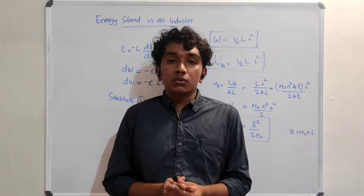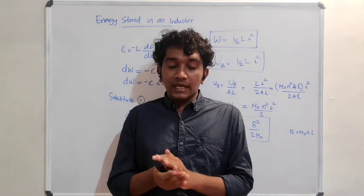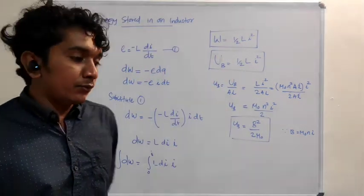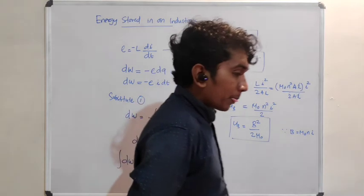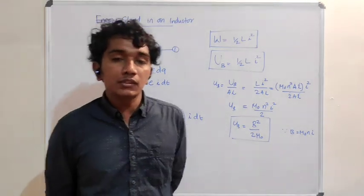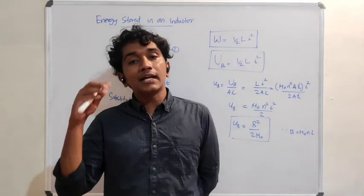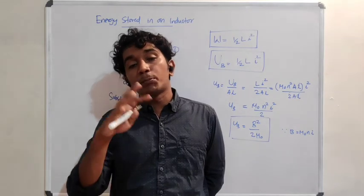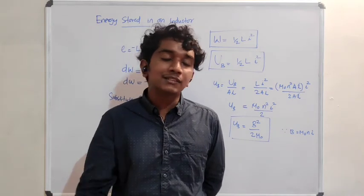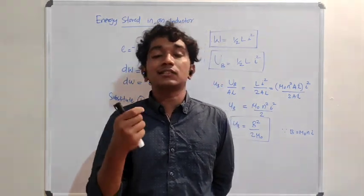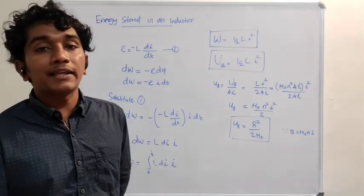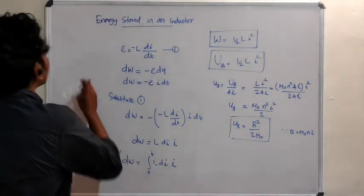We are going to talk about the magnetic potential energy associated with an inductor. When a current is introduced in a particular circuit — in an inductor circuit — the inductance will try to oppose the current. So if you want to establish that current, we have to do some work against the inductance, or we have to do some work against the opposition by some external agencies.